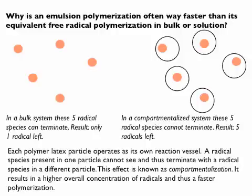So the next question is: we know now a little bit about how monomers swell, that there's a certain rate involved and that it's important that the rate of monomer entry is higher than the rate of consumption. Otherwise you end up in diffusion-controlled systems. An interesting observation is that if you do an emulsion polymerization it's way faster than an equivalent bulk polymerization. An emulsion polymerization of styrene typically takes three to four hours, and a bulk polymerization takes one to two days.